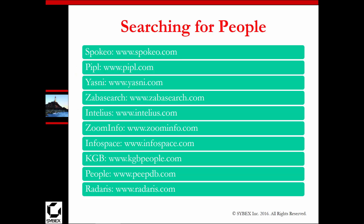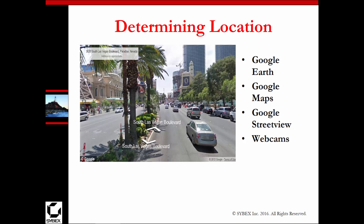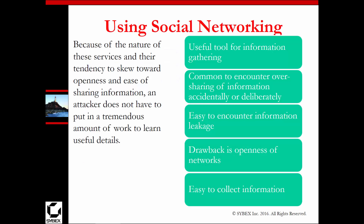Another option is searching for people — there are a lot of people-searching tools available. If we're looking at photos, we can use detailed information from Google Earth, Google Maps, and webcams to help determine location. We also have the ability to analyze social networking to gather additional information. We actually share a lot more information than we realize, and we can easily encounter information leakage — saying things that we don't really mean to share for everyone to see, and this information is easily collectible.